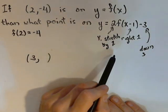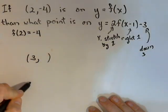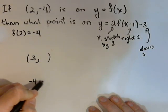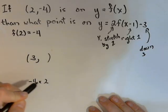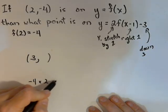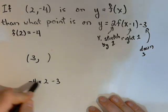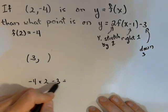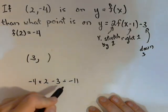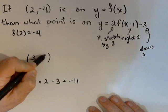We've got two things going on with our y-value. We're taking the -4, and we're stretching it by 2, and then we're moving it down 3. So -4 times 2 is -8, minus 3 is -11, and there's our new y-value.